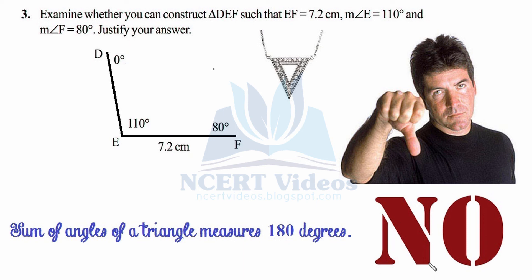Justification: the sum of angles of a triangle measures 180 degrees, but here the two given angles alone sum to 190 degrees, so this triangle is not possible. Take any triangle — like a triangular shape in a diamond necklace, whether isosceles or otherwise — all three angles always add up to exactly 180 degrees. Therefore, we cannot construct triangle DEF with those given angles. That is the answer to Question 3.